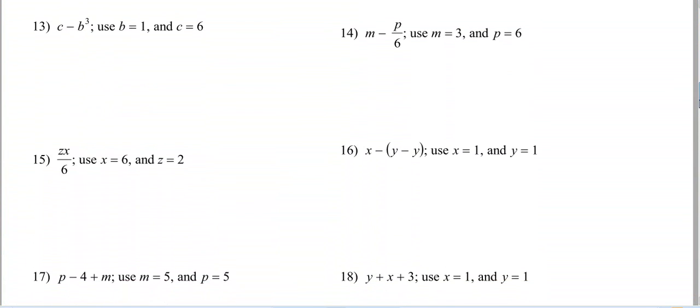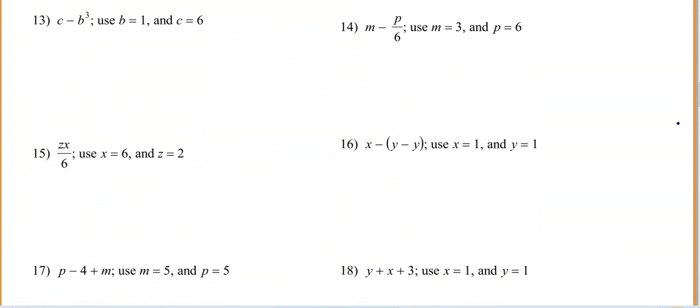Let's look for anything that looks a little bit different. Let's do 13. You got C, which is 6, minus 1 cubed. Well, 1 cubed is 1. You got 6 minus 1, which is equal to 5.